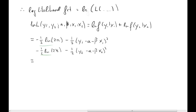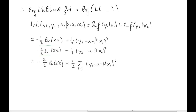This can be somewhat simplified. We have the −½ ln(2π) term twice, so with T observations that would be −T/2 · ln(2π). Then we factor out −½ and get a sum: −½ · Σ(y_i − α − βx_i)² for i = 1 to 2. This is our log-likelihood function. To find maximum likelihood estimators for α and β, we find the values that maximize this expression.